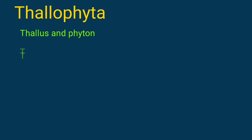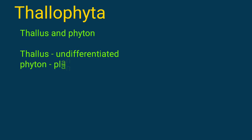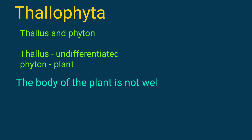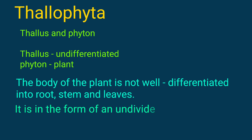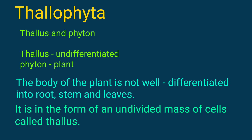Thallophyta is formed from two words: Thallus and Phyton. Thallus means undifferentiated and Phyton means plant. So, the body of the plant is not well differentiated into root, stem and leaves. It is in the form of an undivided mass of cells called Thallus. For example, algae.